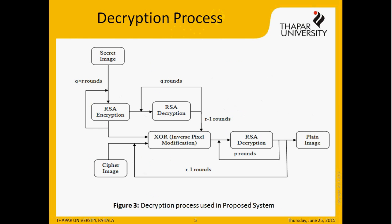Decryption algorithm: In this process, first the secret image is encrypted for Q×R rounds for inverse pixel modification. The result of this phase is decrypted using RSA decryption for P rounds, and the output is again input to the ciphered text. This process continues up to R-1 rounds. After R-1 rounds, the output from the RSA decryption algorithm will be the decrypted image, or plain image.